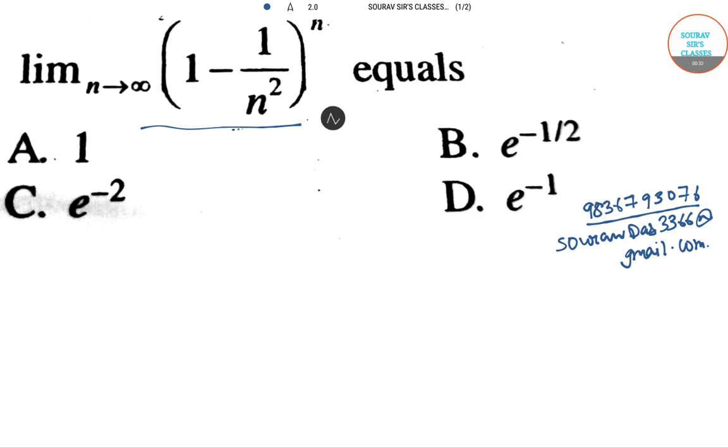To solve this, we rewrite the expression. The term (1 - 1/n²) can be factored as (1 + 1/n)(1 - 1/n), giving us limit n→∞ [(1 + 1/n)(1 - 1/n)]^n.